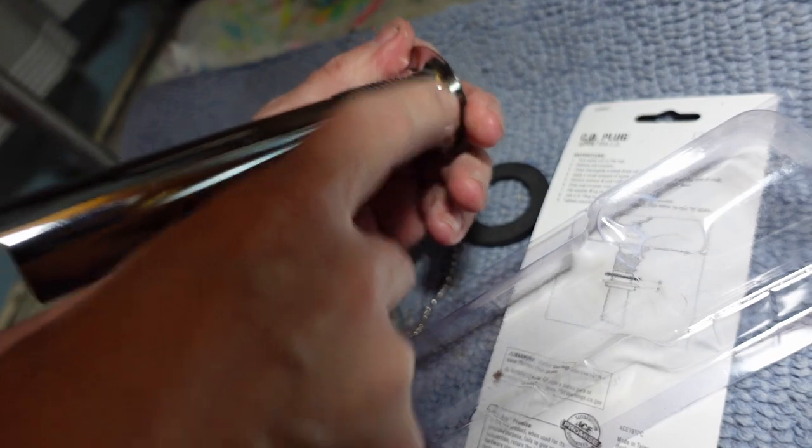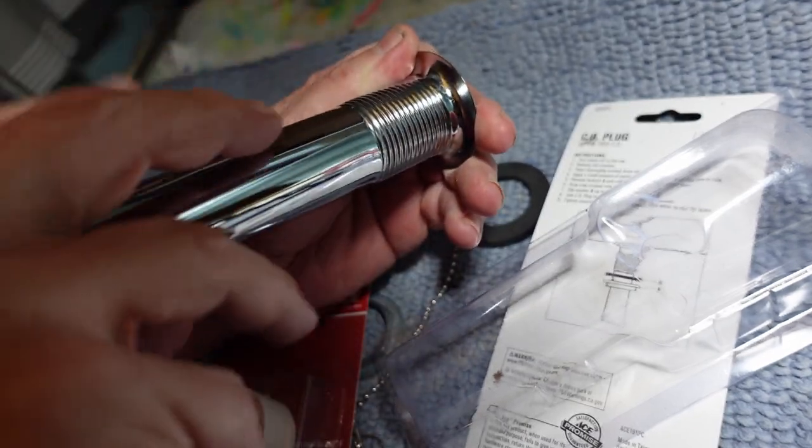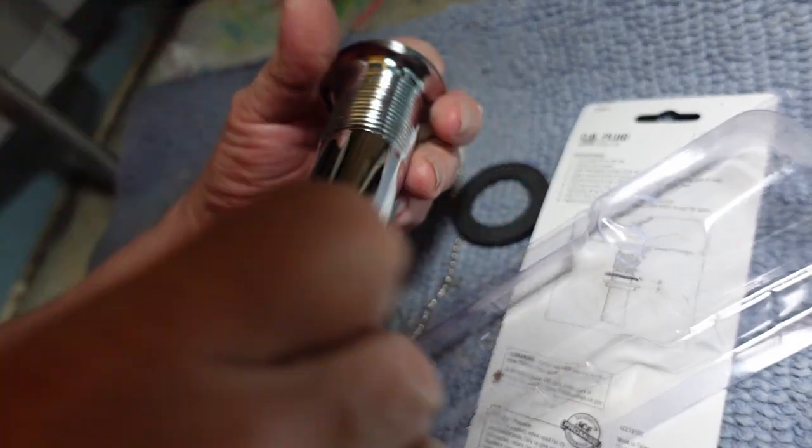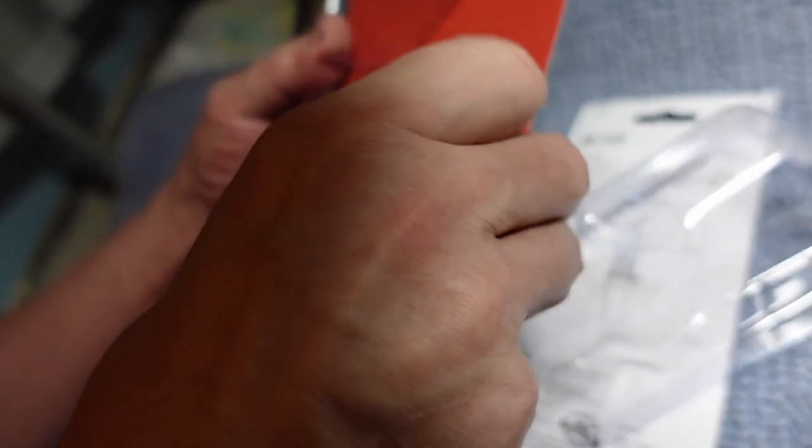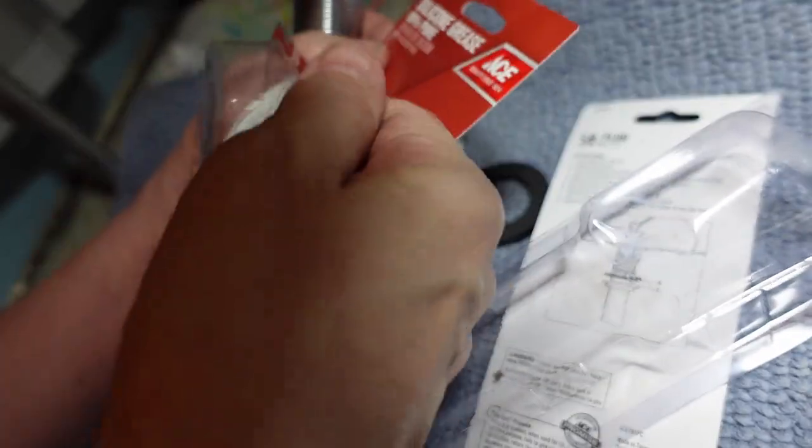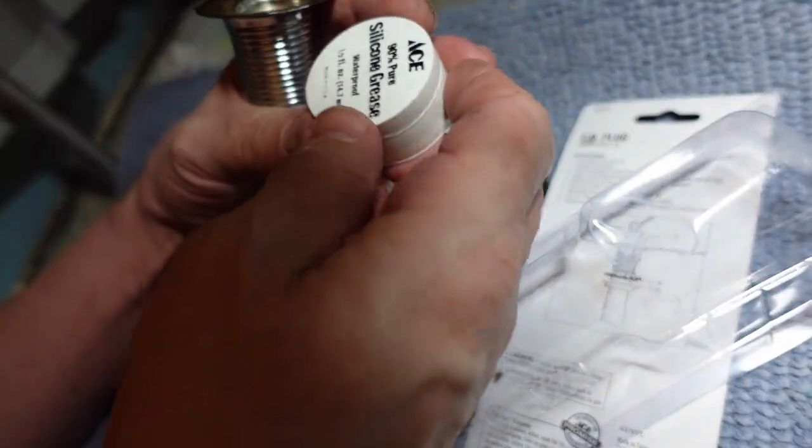One thing that I like to do, now this is going to go into the sink and it's tapered here. It's got this rounded edge that matches the one in the sink. They're standard. But what I like to do is put in a little bit of this silicone grease.